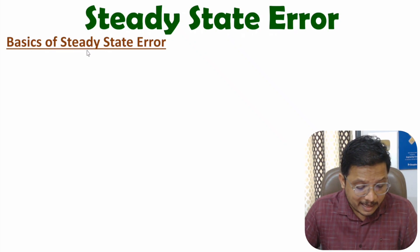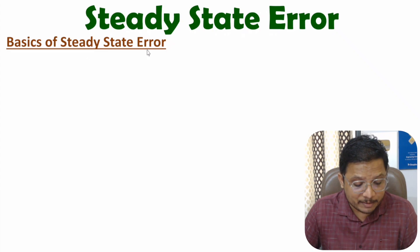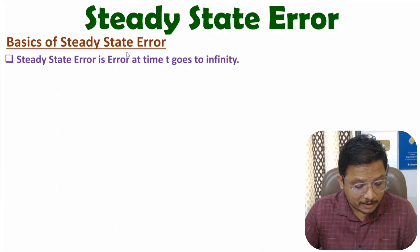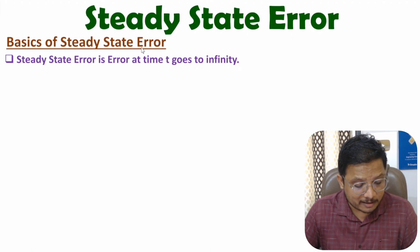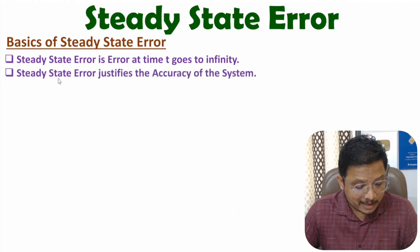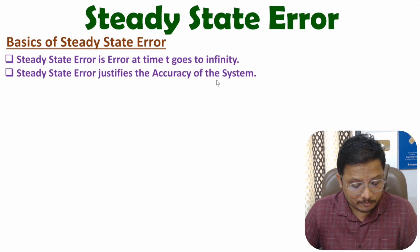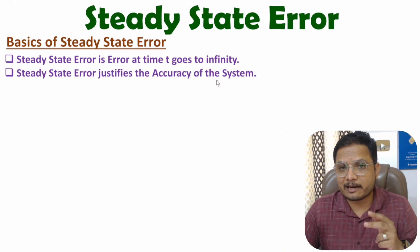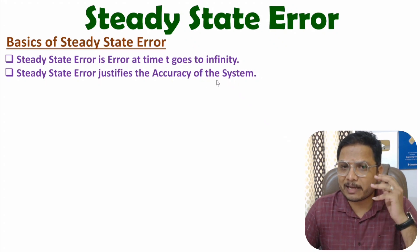Steady state error is the error of a system at time t goes to infinite. So after a long duration, the error of the system is the steady state error — it is the error at time t goes to infinite. Steady state error justifies the accuracy of the system, and it depends on many parameters.